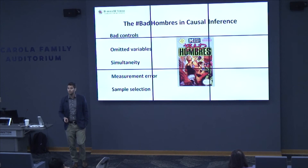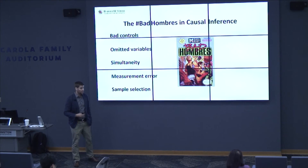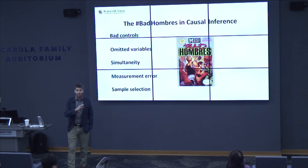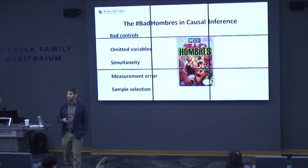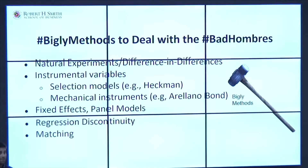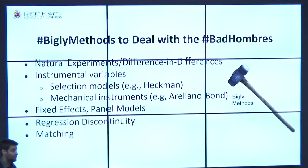The bad hombres in this class are: bad controls, omitted variables, simultaneity, measurement error, and sample selection. There are other bad hombres — colliders, which we see as a variant of bad controls. The Biggley methods we talk about include: natural experiments and difference-in-differences models, fixed effects and panel models, instrumental variables, Heckman selection models, mechanical instruments, regression discontinuity models, and matching models.